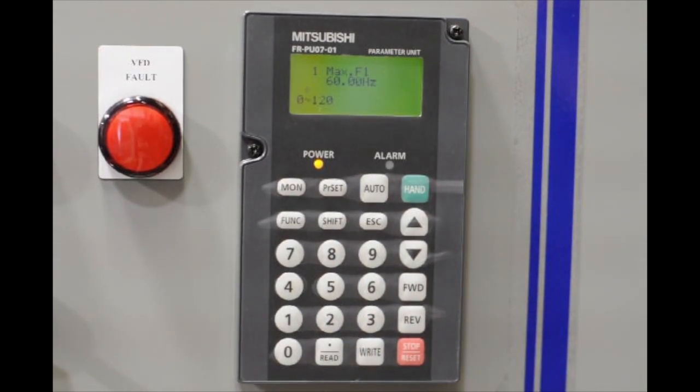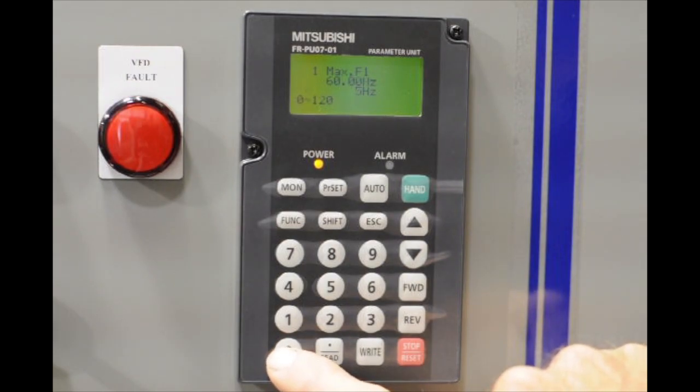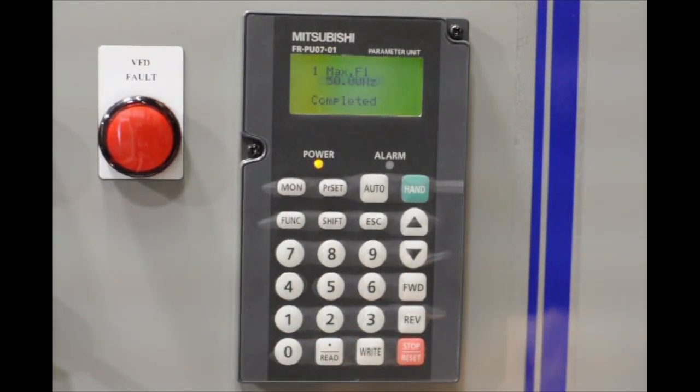This will show you what the parameter number is, what parameter title is, and the actual setting value. This parameter is set for 60 hertz, which is our desired setting, but for this illustration, I'm going to go ahead and change it to 50 hertz. We're going to type in 50, and we're going to hit write.